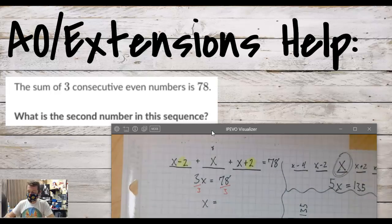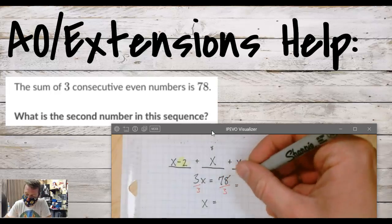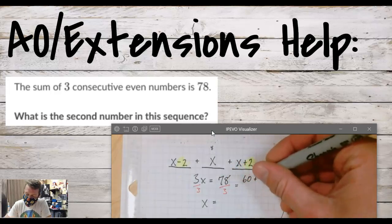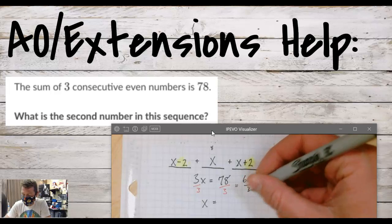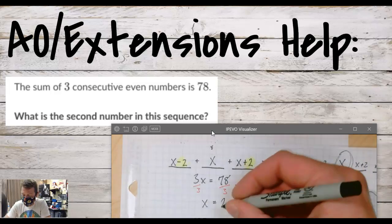Yeah, because if I break this up, let's talk about how the math could be easier. I can make this 60 and 18, right? So if I think about 60 divided by 3 and 18 divided by 3, that's how we get that 26.